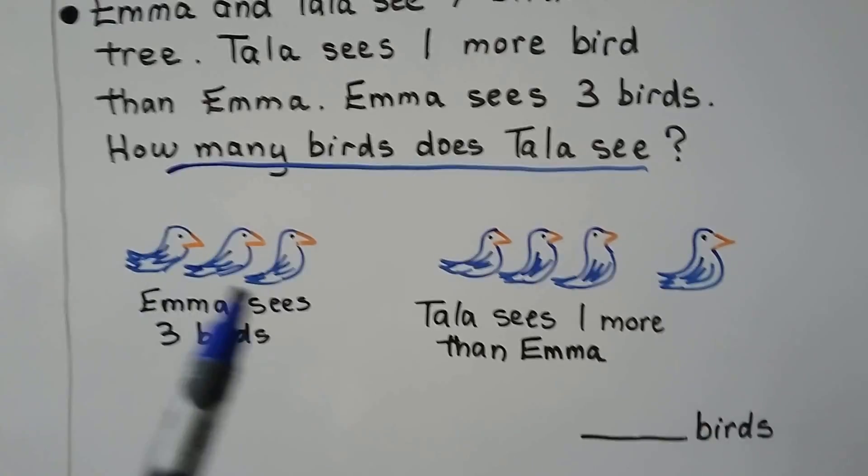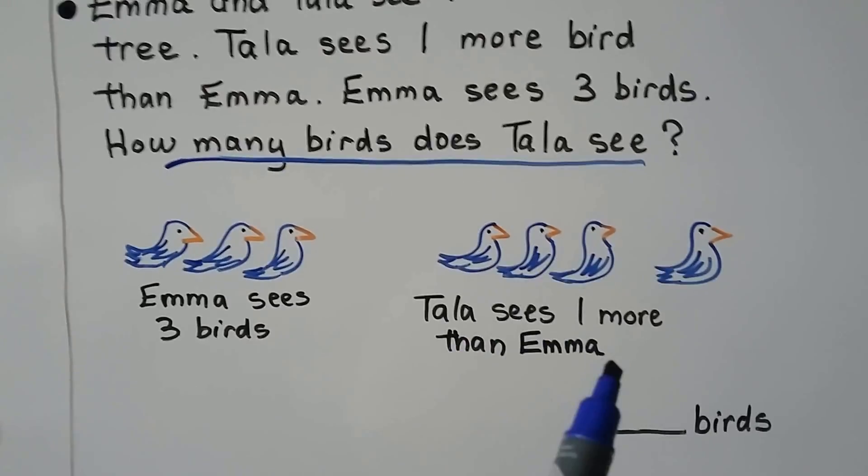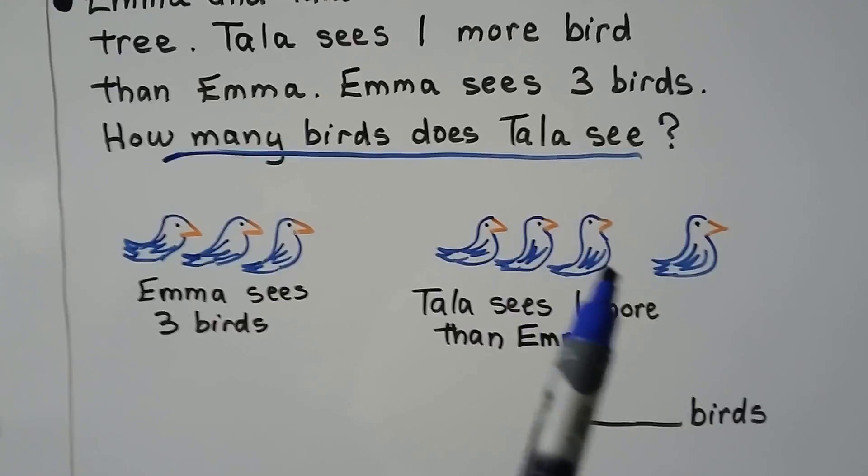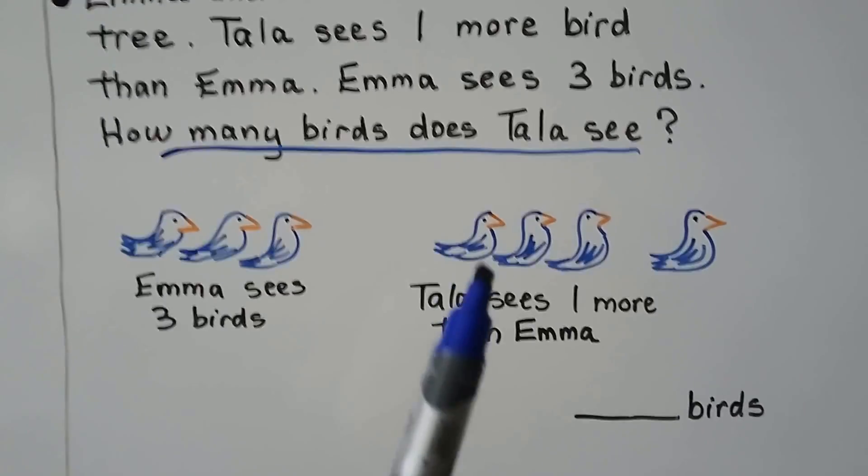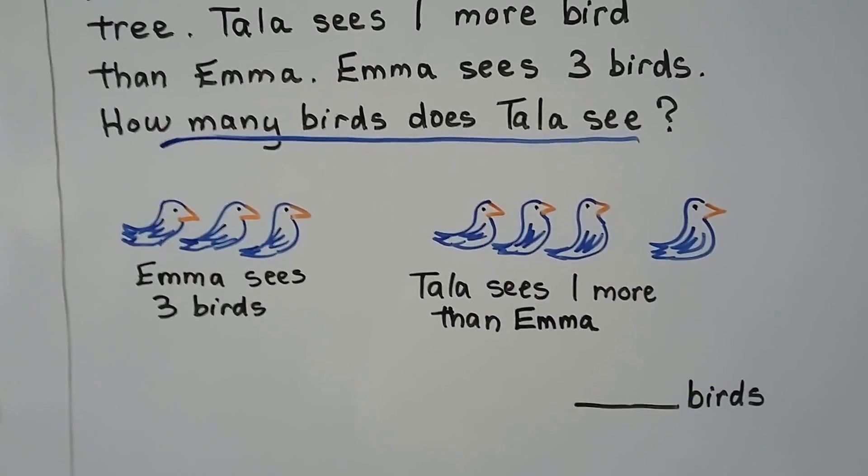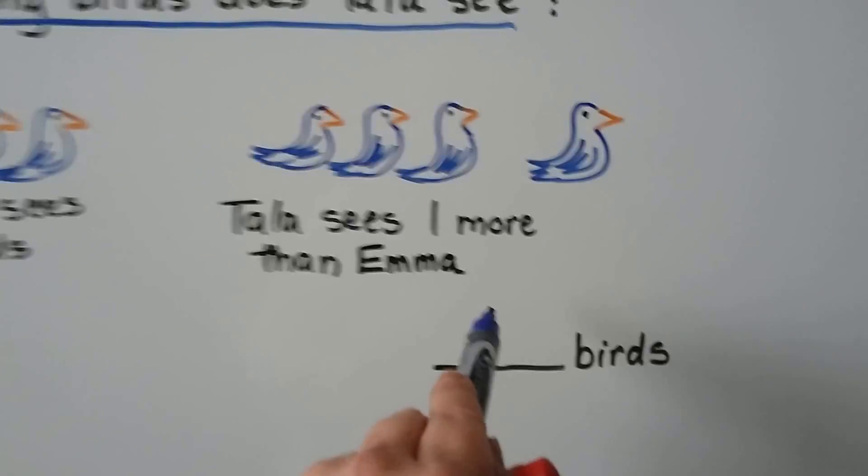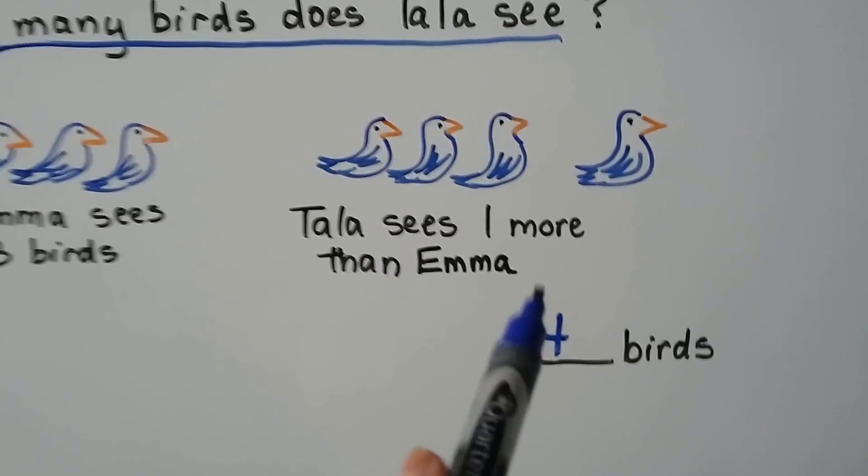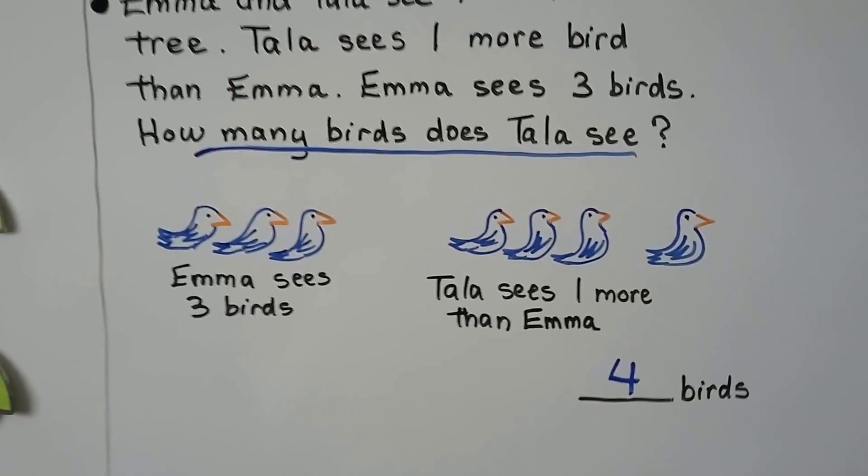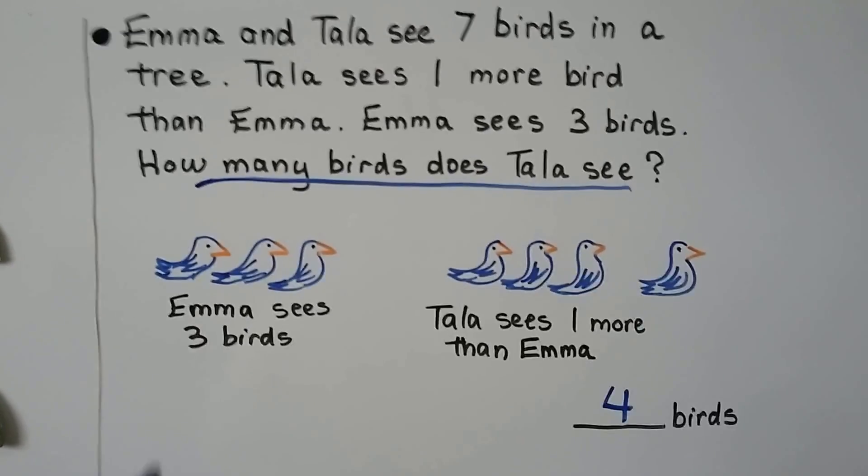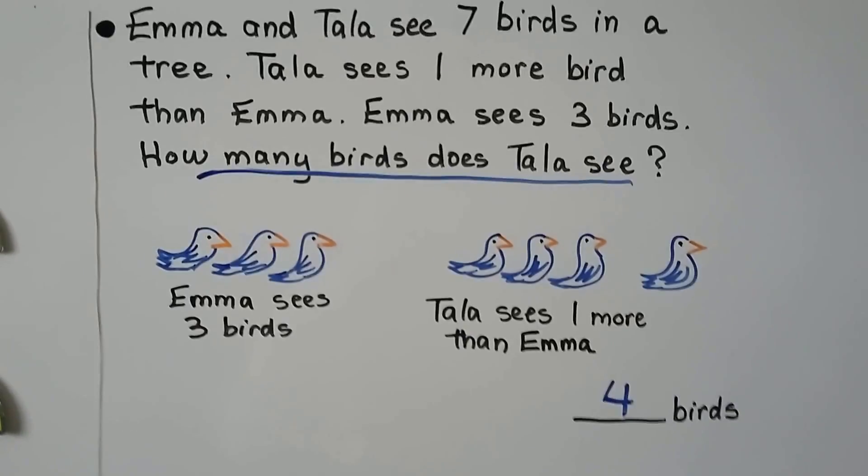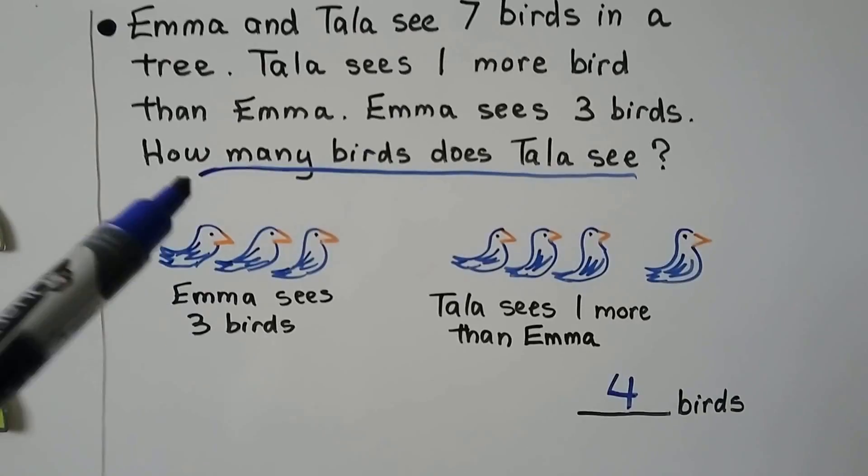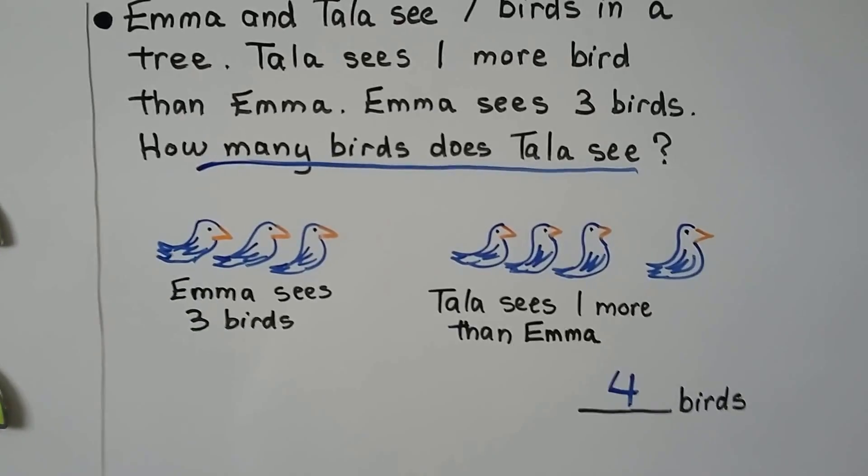If Emma sees three birds and Tala sees one more than her, then she sees three and one more. How many birds does Tala see? One, two, three, four birds. It's very important to answer exactly what it's asking of us. If we didn't pay attention, we would think that it wanted in all, and we would put a seven there, and it would be wrong. So make sure you're answering what it's asking, okay?